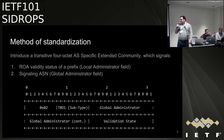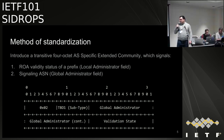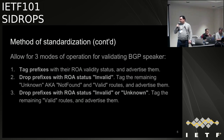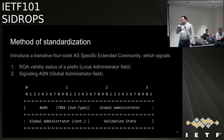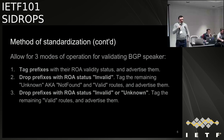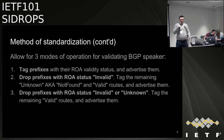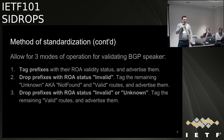This is the encoding. The salient points are that the validation state is the last octet, which is either zero, one, or two — so either valid, unknown, or invalid. We're going to be requesting a specific code point for the subtype. The signaling AS — in our case, the IXP route server — is going to be in the global administrator field.